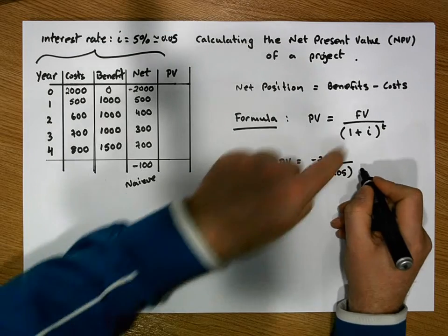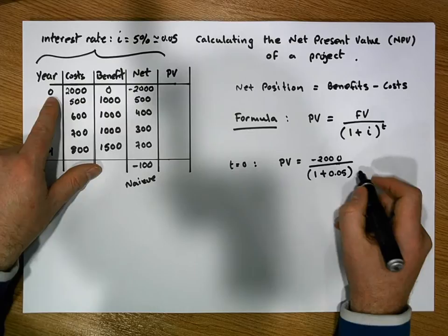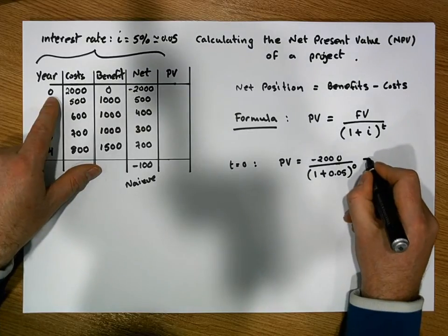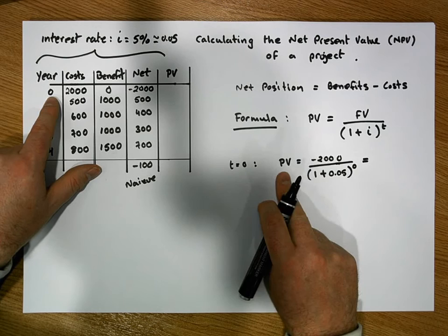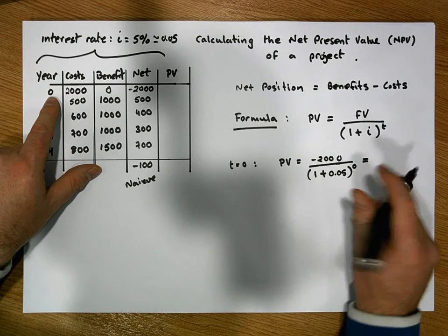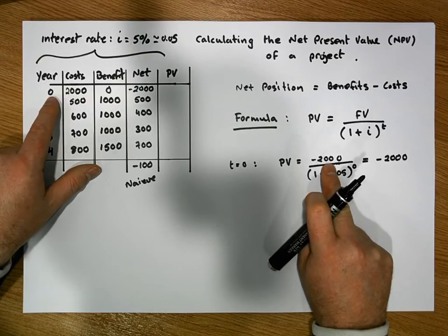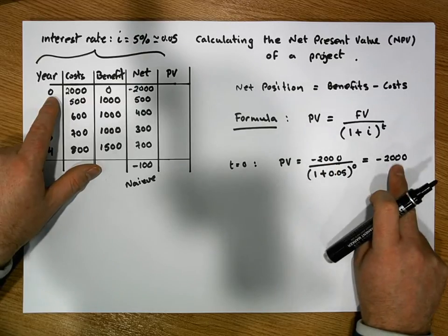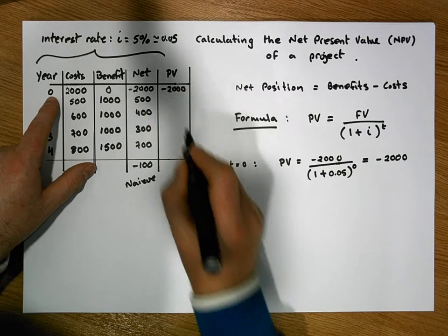Here's where discounting that by is t. Now, we're discounting it by zero years. Now, any number raised to the power of zero simply equals one. So the present value of a future value of minus 2,000 euros is minus 2,000 euros today. So if you owe 2,000 euros today, you still owe 2,000 euros today. So the present value is minus 2,000 euros.